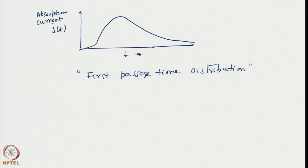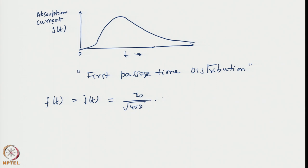The first passage time distribution is the probability distribution that the random walker has crossed the point zero for the first time. That is equivalent to the quantity −dS/dt, or alternatively the J(t) that we have given. If we define that probability distribution as f(t), then f(t) = J(t), and it is given by x₀ / √(4πD) × t^(−3/2) × e^(−x₀²/4Dt).